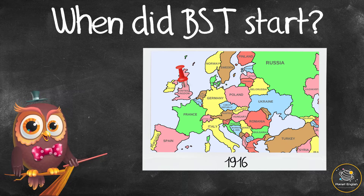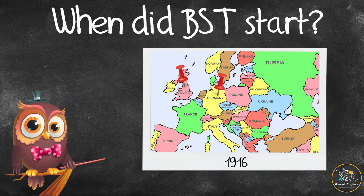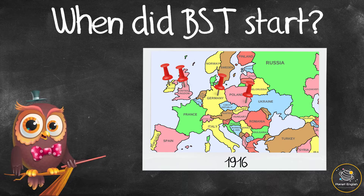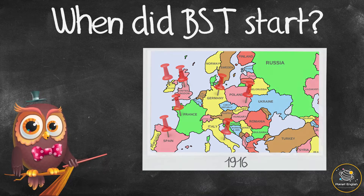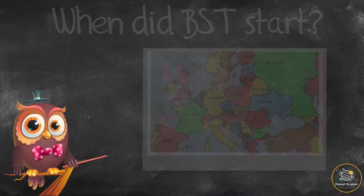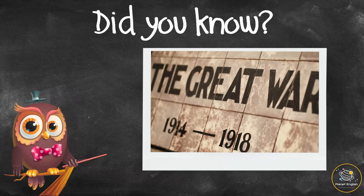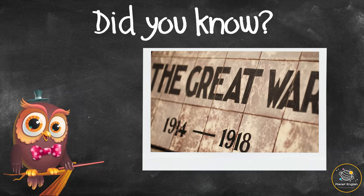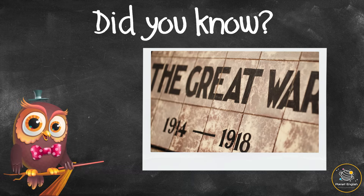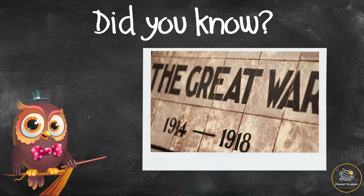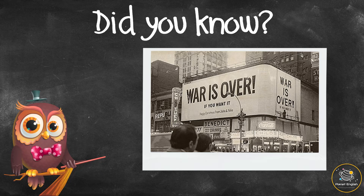When did BST start? BST was first introduced in the UK in May 1916, a month after it was introduced in Germany. Many other European countries also started to change their clocks around the same time. Did you know? Daylight Saving Time stopped in most countries after World War One and only started again after World War Two.